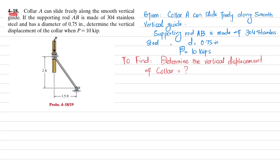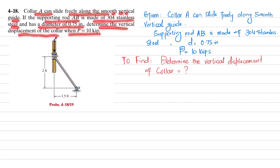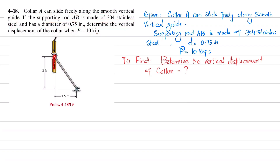Welcome back. Problem 4-18: Collar A can slide freely along the smooth vertical guide. The supporting rod AB is made of 304 stainless steel and has a diameter of 0.75 inch. Determine the vertical displacement of the collar when P is 10 kips. Let's start with the solution — the first step will be to find the internal loading.